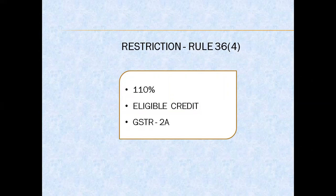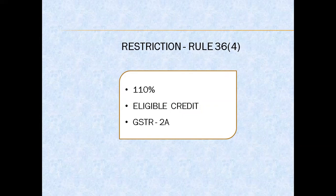Form GSTR-2A: on the basis of data uploaded by the input supplier in Form GSTR-1, Form GSTR-2A is auto-generated for the recipient. The data of GSTR-2A is auto-populated based on the GSTR-1 uploaded by all input suppliers for the tax period. GSTR-2A is a read-only return and no action can be taken on it — it is auto-generated on the basis of GSTR-1.